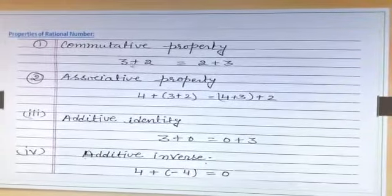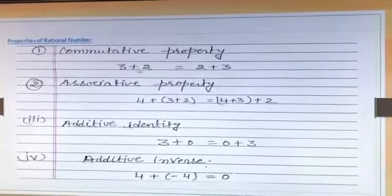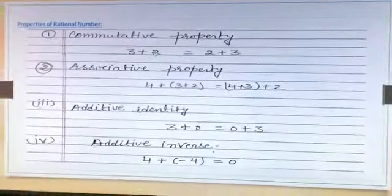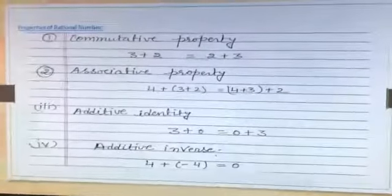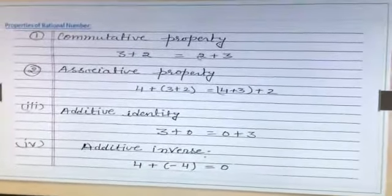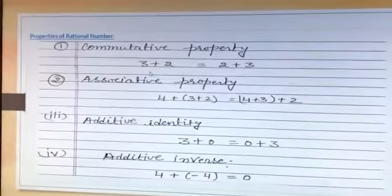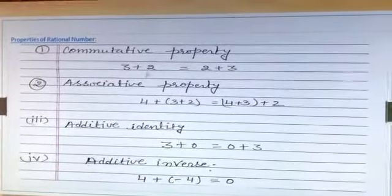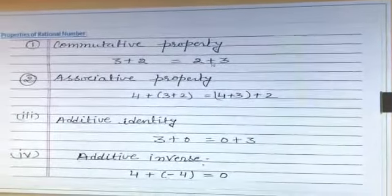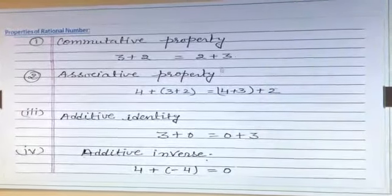In the commutative property, when we add 2 rational numbers and write them in any order, the answer will remain the same. Like 3 plus 2 equals 5. If we write 2 plus 3, then also it is 5.